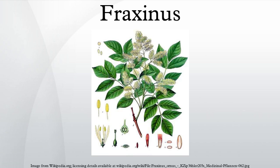The emerald ash borer is a wood-boring beetle accidentally introduced to North America from Eastern Asia via solid wood packing material in the late 1980s to early 1990s. It has killed tens of millions of trees in 15 states in the United States and adjacent Ontario, Canada, and threatens some 7 billion ash trees in North America. Research is being conducted to determine if three native Asian wasps, natural predators of the emerald ash borer, could be used as biological control. The public has been cautioned not to transport unfinished wood products such as firewood, to slow the spread of this pest.